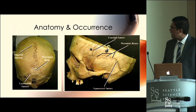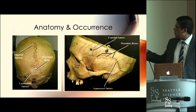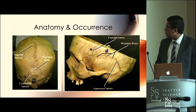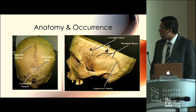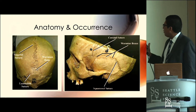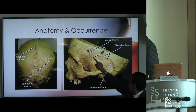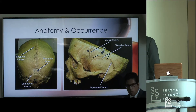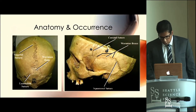These additional images show more examples of what was described. The image on the left shows a wormian bone more so at the fontanelle rather than right within the suture. The one on the right shows a series of wormian bones — about three or four separate wormian bones occurring within the squamosal suture.